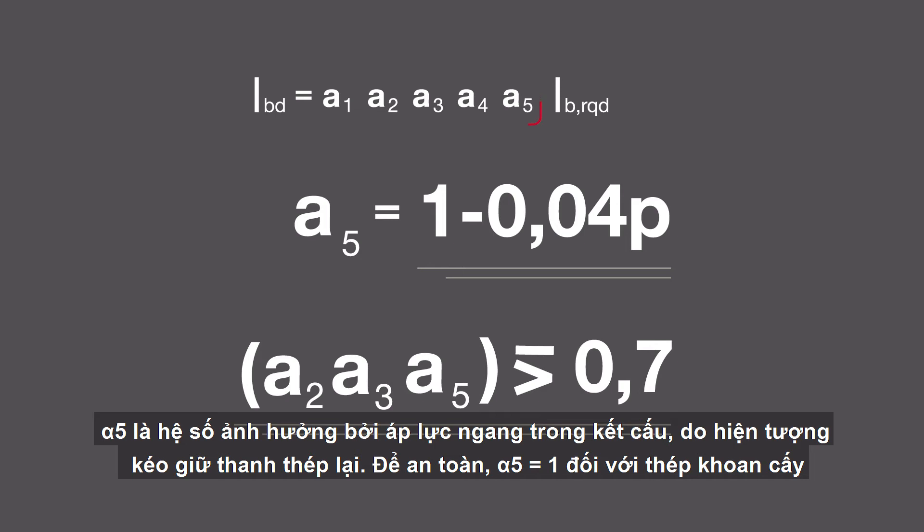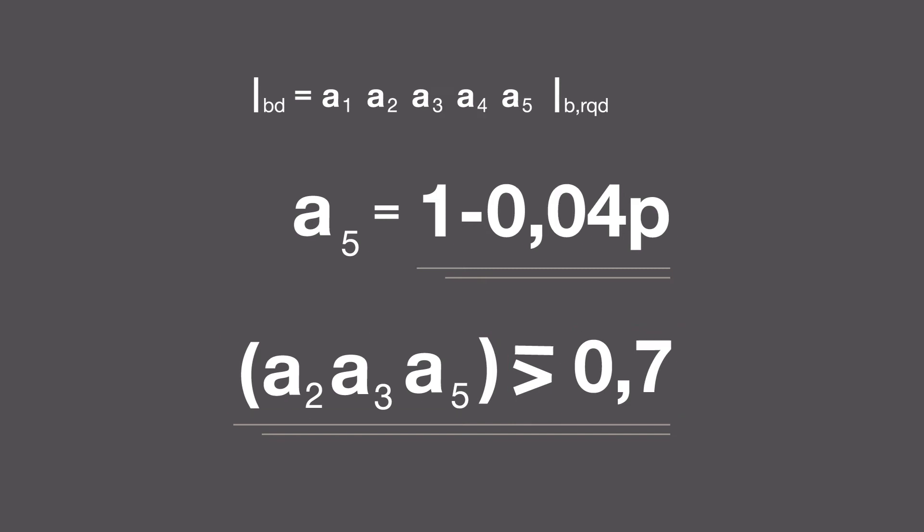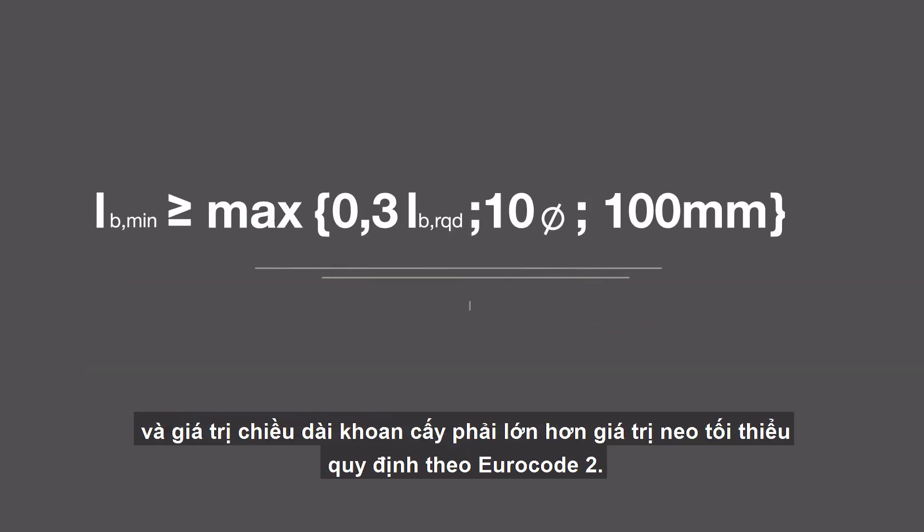In the end, be sure that the product of alpha 2, alpha 3, alpha 5 is greater than or equal to 0.7, and that the design anchorage length is greater than the minimum required by Eurocode 2.